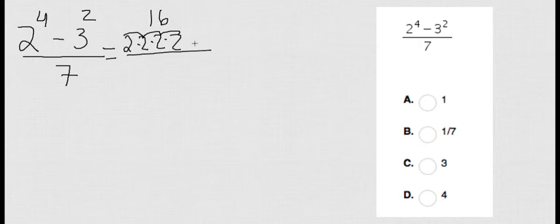And 3 squared is the same as 3 times 3, which 3 times 3 is going to be 9. And then the bottom is just 7.